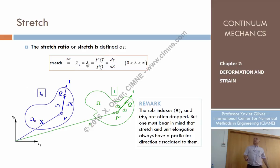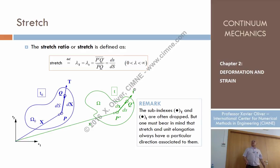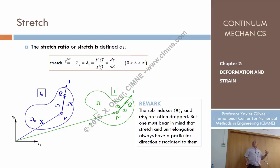I could also associate this lambda to the direction of these two particles not in the reference configuration, but in the present configuration, which could be different. The result would be the same: the ratio differential of s divided per unit differential of capital S. I could call it lambda_T (capital T) if I refer to the direction in the reference configuration, or lambda_t (small t) if I refer to the direction of the same particles at the present configuration.